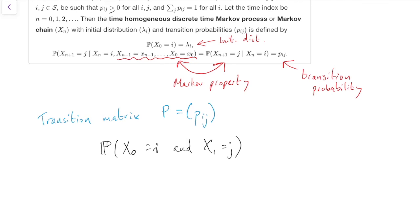That means first we have to start from i to get x0 equals i. So the probability that we start from i is lambda i. That's using the initial distribution lambda. And then we have to move from i to j to get to j at time x equals 1. And that's p, i, j.